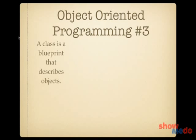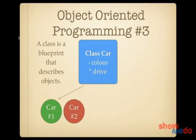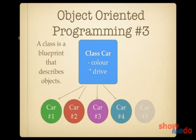Typically you want to have very similar objects, and you can achieve that by using a class. A class is a blueprint that describes objects. Here we're defining a class Car and we're saying that a car has a colour and that it can drive. Now we can use that class to create different cars, each of them having a different colour. And all of these cars — car 1, 2, 3, 4, and 5 — are said to be instances of class Car.